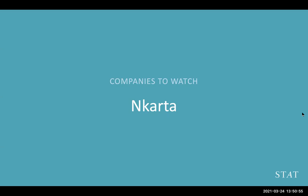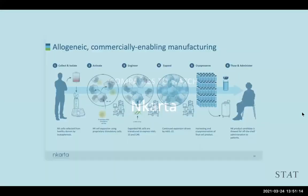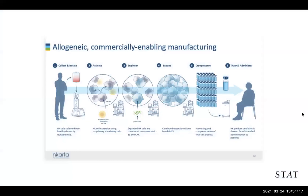The reason I wanted to look at Nkarta is that I've picked companies that have different source material for their NK cells. Whereas Fate has a stem cell bank they used to create NK cells, Nkarta harvests NK cells from healthy donors — they go into a facility and have blood drawn, and NK cells are extracted. One interesting thing about Nkarta and one of the questions that has come up with NK cells is how you preserve these cells. They've shown some early data showing you can freeze and then defrost NK cells while retaining activity.